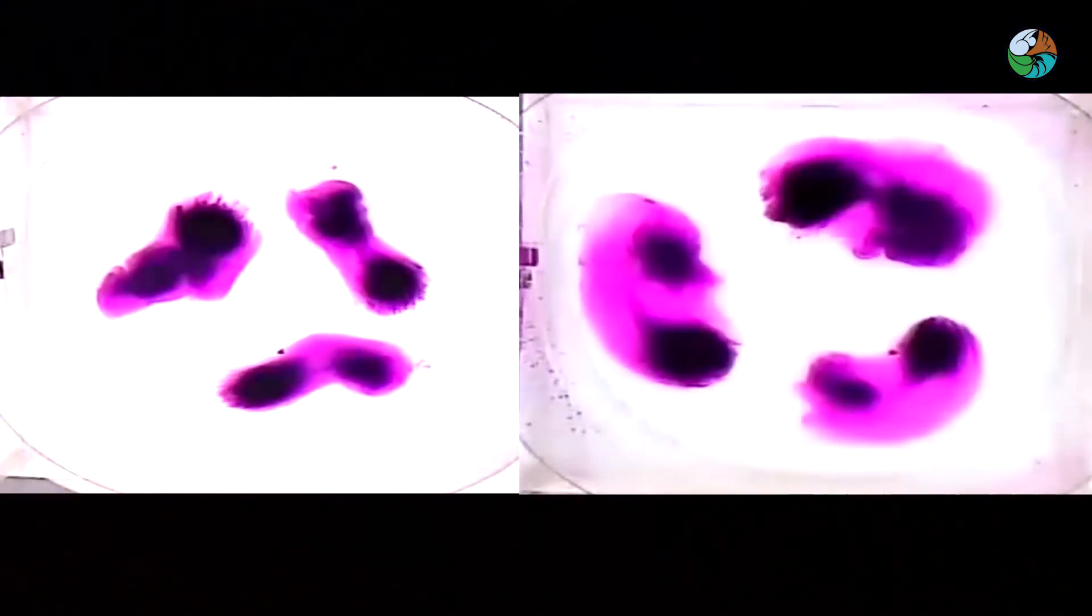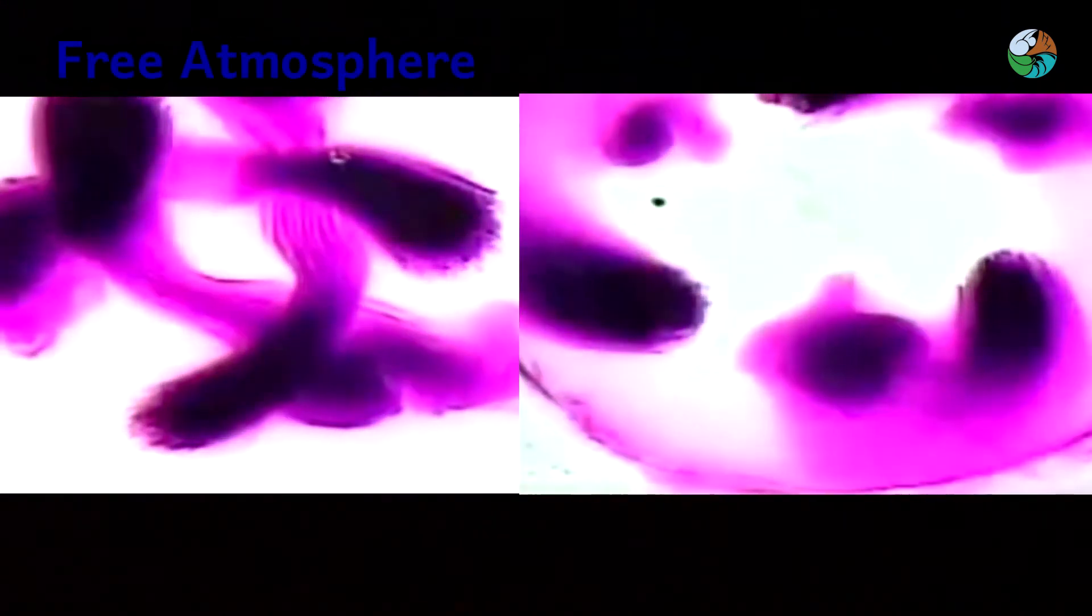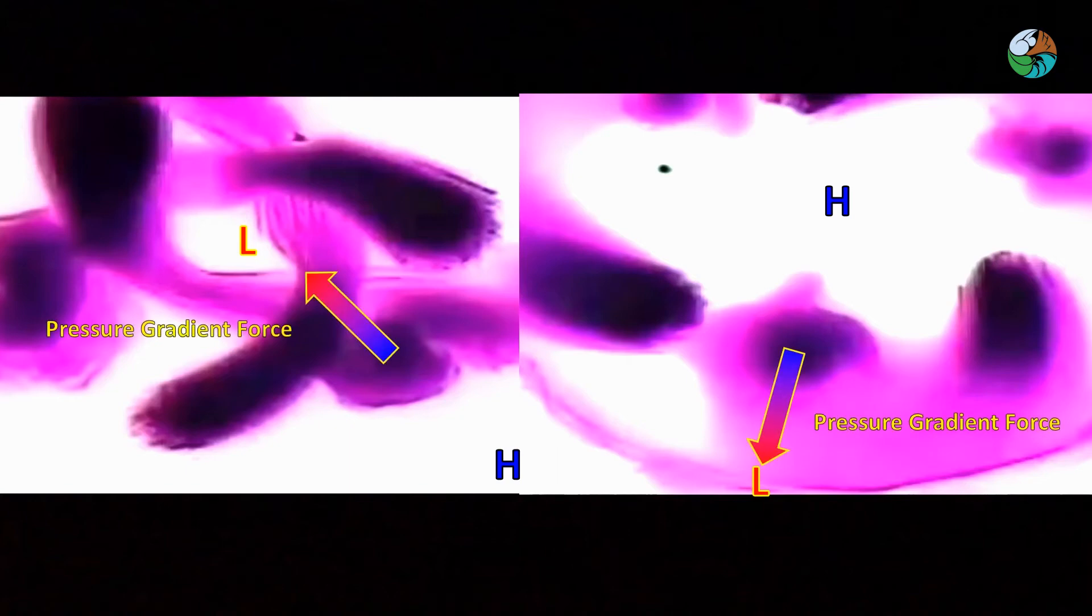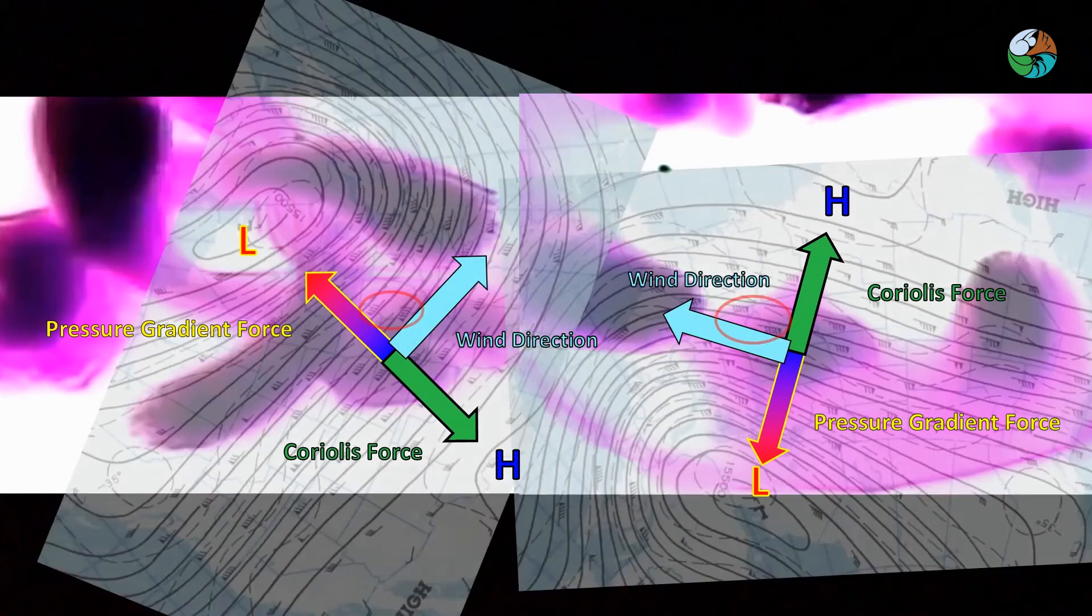Let's regard our experimental setup as the atmosphere. Have a look at the balance of forces. High up in the free atmosphere, frictional force is small and therefore negligible. The pressure gradient force balances with the Coriolis force. The wind direction is along the isobars.